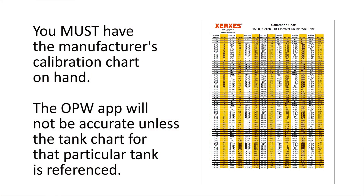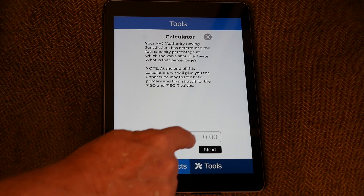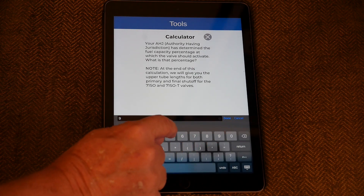The calculator will give you four values. You don't need to make any adjustments to your authority having jurisdiction percentage — just enter that percentage when it asks. Don't try to pre-calculate adjustments for final shutoff versus primary; we're going to give you those values. Just follow the directions the app gives you. You're going to need a tank chart — if you do not have a tank chart, you can't use this application. You can't guess at the numbers; you must have the actual tank chart for the tank you're installing this valve into.